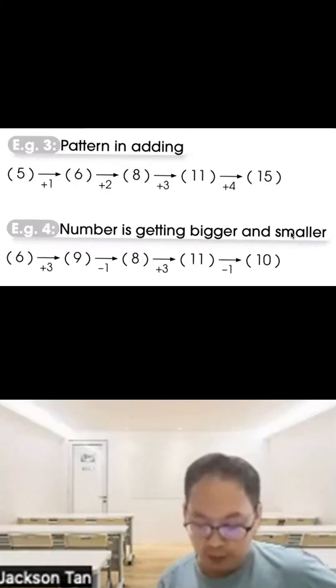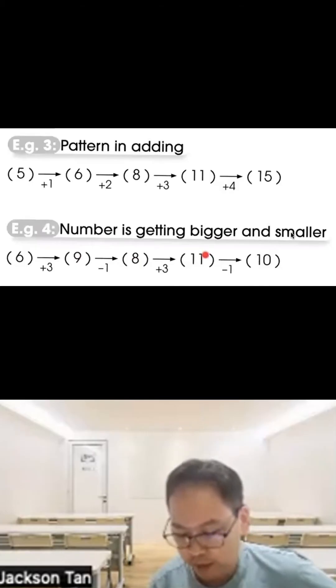Sometimes numbers get bigger and smaller: from 6 to 9 is bigger (plus 3), 9 to 8 is smaller (minus 1), 8 to 11 is bigger (plus 3), 11 to 10 is smaller (minus 1). The pattern is plus 3, minus 1.